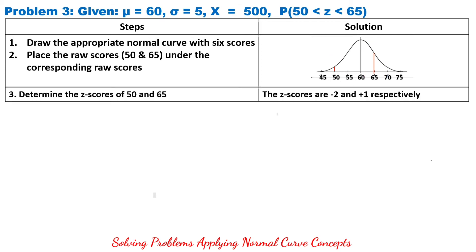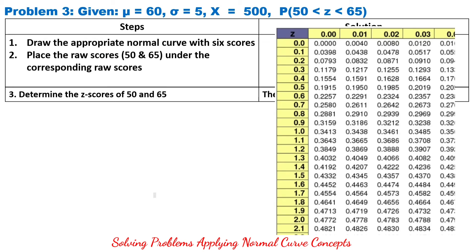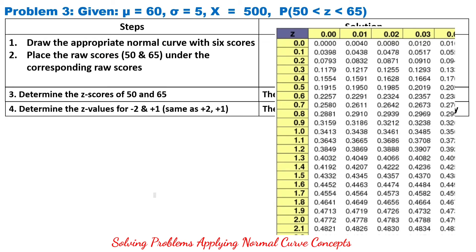Next, determine the Z-scores of 50 and 65. The Z-score of 50 is negative 2, and the Z-score of 65 is positive 1. From the Z-table, the value for Z equals negative 2 (same as positive 2) is 0.4772, and for Z equals 1, it is 0.3413.